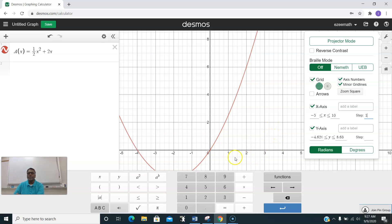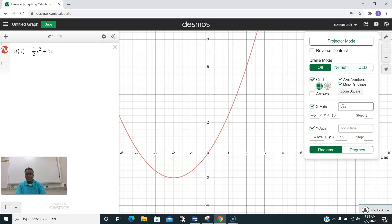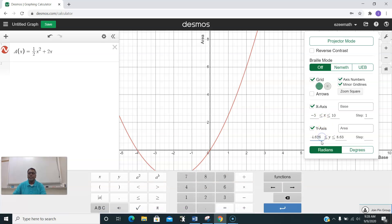These x values on the x-axis, this is the base of the given triangle. And y values are the height—no, the area, sorry—area of the triangle.